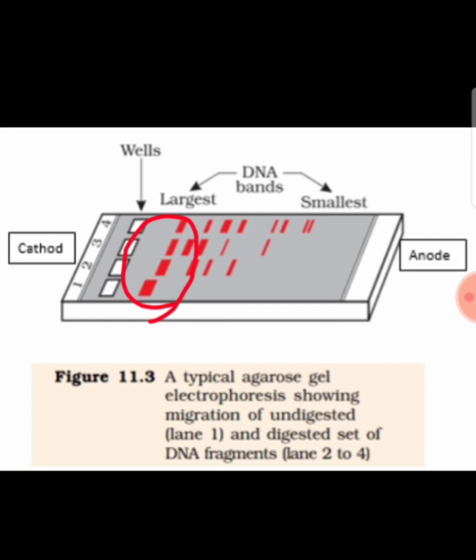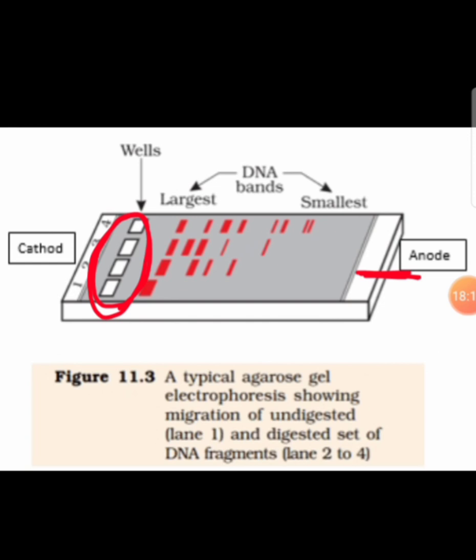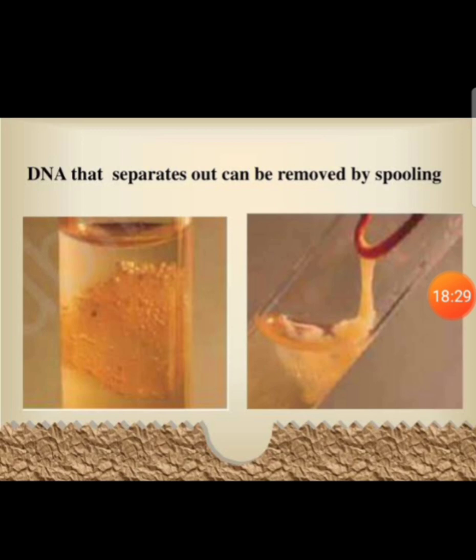Here you can find the structure of agarose gel electrophoresis. Larger DNA fragments migrate more slowly and smaller DNA fragments migrate faster, and all DNA fragments move toward the positive electrode called the anode because DNA is negatively charged. The process of separating the DNA as a precipitate is called spooling — by adding chilled ethanol we can precipitate the DNA, which can then be removed by spooling.